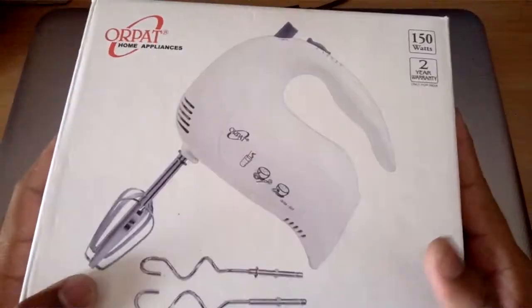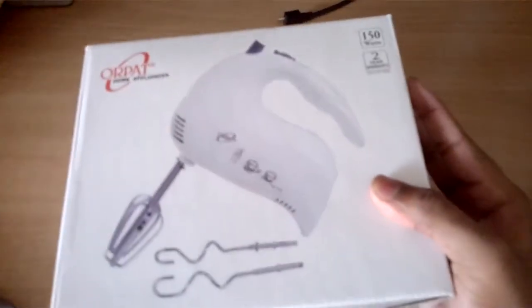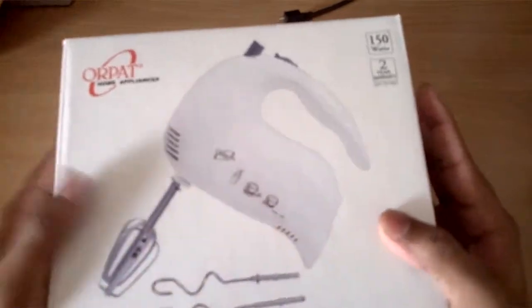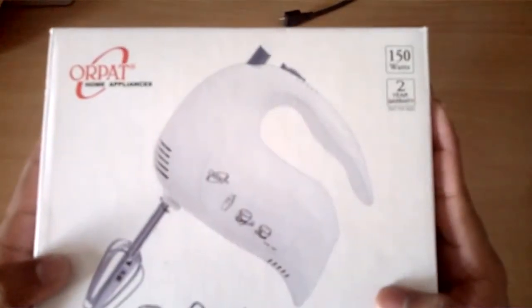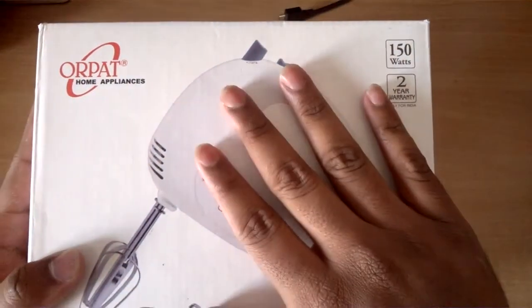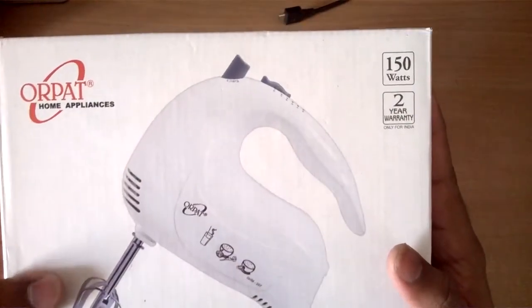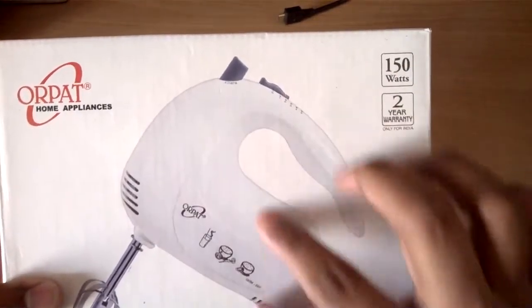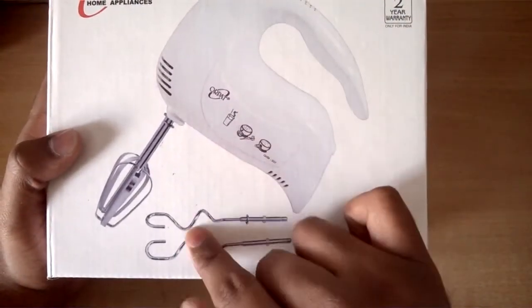I purchased this thing just let me keep this aside. So this is the home appliance from Orpat, it's a hand blender. I purchased this thing from Amazon for 777 rupees including shipping. Let's look at the product, this is how it looks.